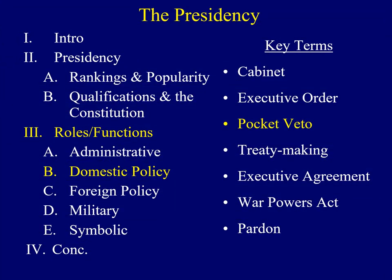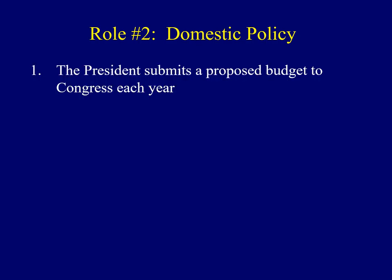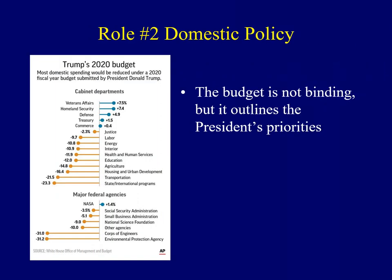The next role or function deals with domestic policy. One way the president shapes domestic policy is through the budget — the president is required to submit to Congress a proposed budget each year. The president can propose a budget, but unless Congress passes it, it's not binding. What's important is that it outlines the goals and top priorities of the president. Here you can see an example of President Trump's 2020 budget — areas in blue show where he wants to increase funding, and areas in yellow show where he wants to cut funding.